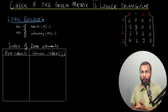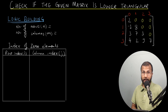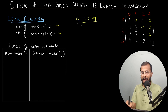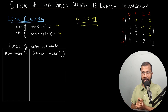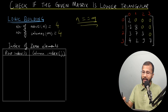Now we are going to build our own logic to check if a given square matrix is lower triangular or not. Given this matrix, first we check the number of rows and number of columns — provided by the user. Here there are 4 rows and 4 columns. If number of rows n equals number of columns m, the matrix qualifies as a square matrix and we can proceed to check the zero elements.